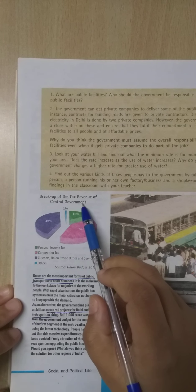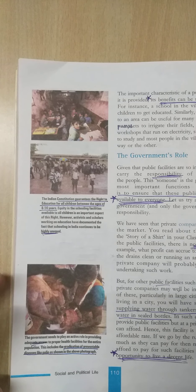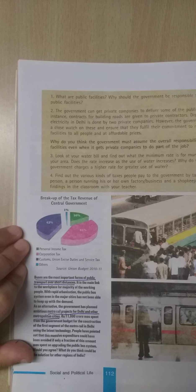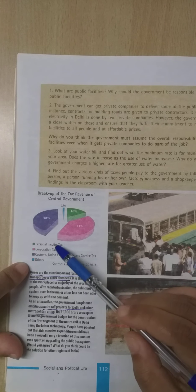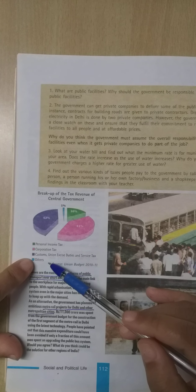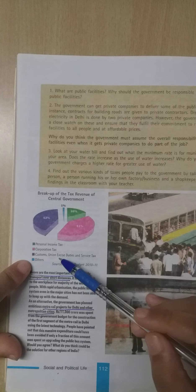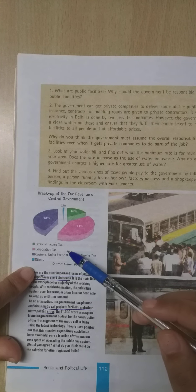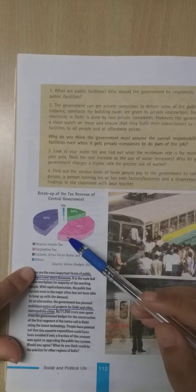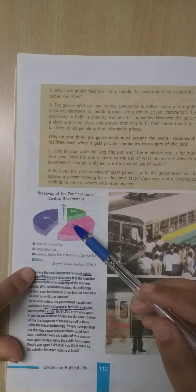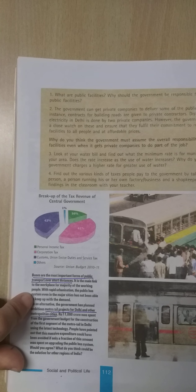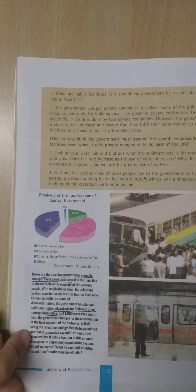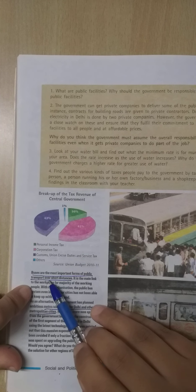Looking at the breakup of central government taxes: a major portion comes from customs, union tax, and service tax, while personal income tax is only about 16% and corporation tax is about 41%. Customs and corporation taxes make up a huge amount compared to personal and other taxes.